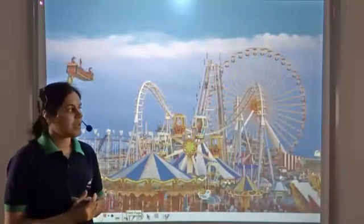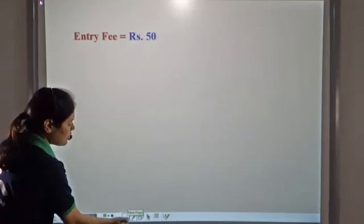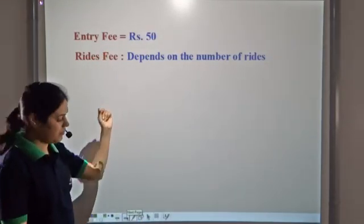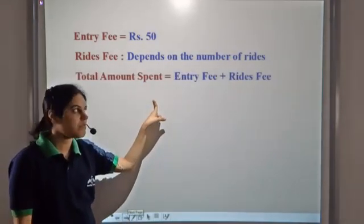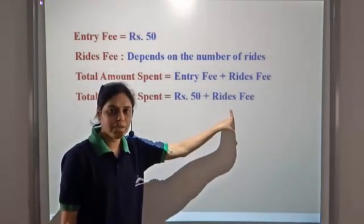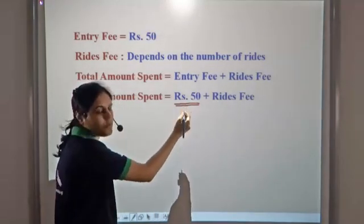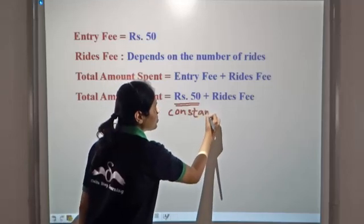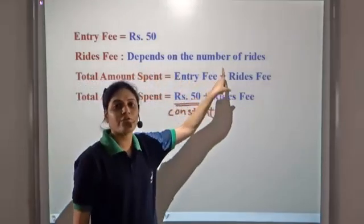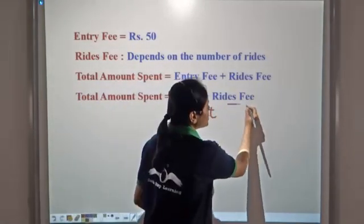Say you go to an amusement park and there is an entry fee of rupees fifty. Once you enter the park there is a rides fee which depends on the number of rides you take. So the total amount you spend is entry fee plus rides fee, which becomes rupees fifty plus rides fee. The entry fee is fixed — as soon as you enter the park you pay this fixed amount, so it is a constant. The rides fee varies because it depends on the number of rides you take: more rides means higher fee, fewer rides means lower fee. So it is a variable.